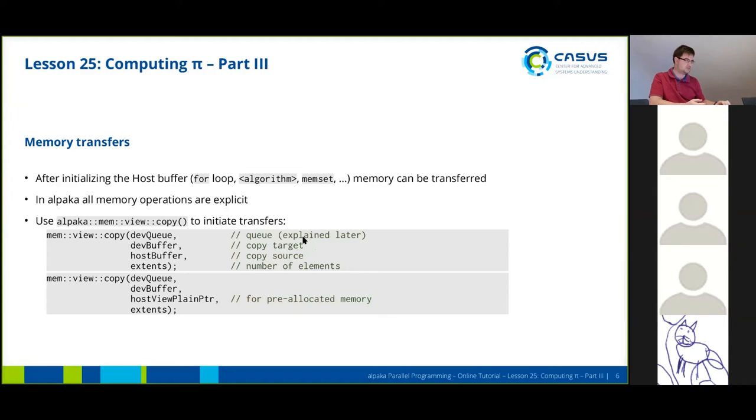The first parameter to a copy function is the queue. We will explain the queue concept tomorrow. Then the second parameter is the target, so where do you want to copy to? The third parameter is the source, where do you copy from? And the last parameter is the extent of the copy, so the number of elements you want to copy.